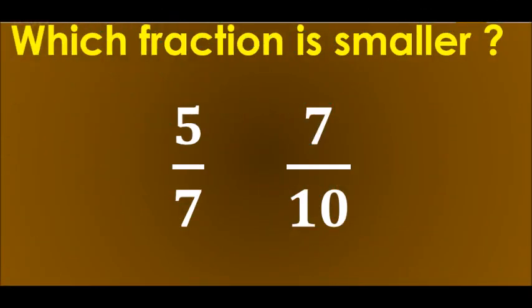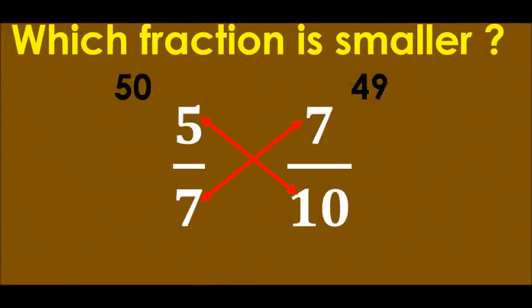There is one more example which I would like to share with you. 5 upon 7 or 7 upon 10. Again, we have two different denominators. What will we do here? We will multiply the two figures. 7 into 7 is giving us 49 and 10 times 5 is giving us 50. We always cross multiply to get the answer.